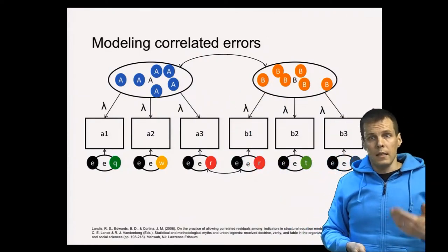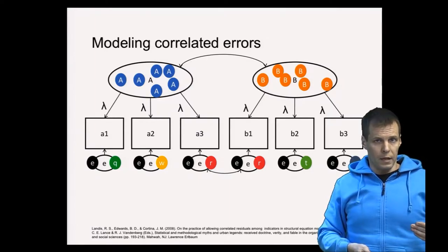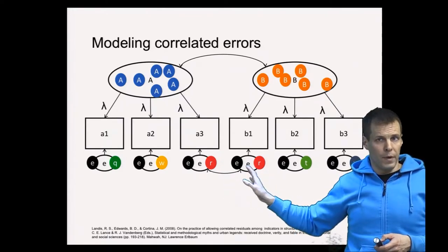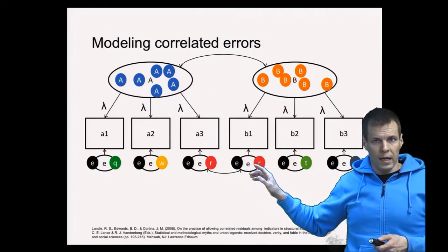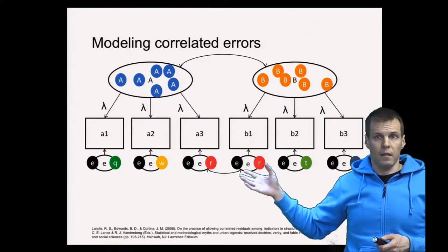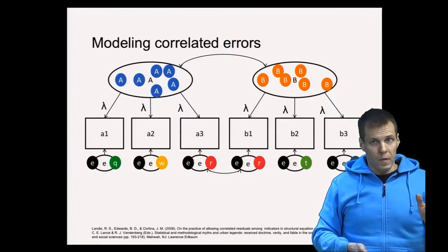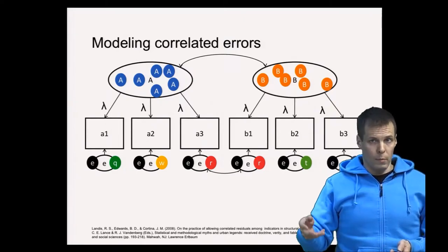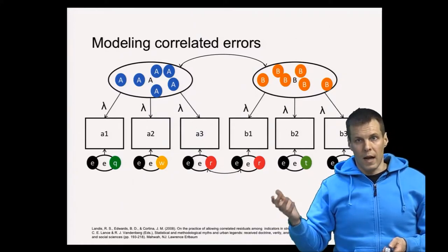This is something many people do: your statistical software will tell you that the model doesn't fit the data perfectly and that you could free some correlations to make the model fit better. But that's a bit dangerous unless you know what you're doing. You should only add correlated errors if you have a good theoretical reason to do so. The fact that your statistical software tells you that you could do something to increase model fit is not a reason to do it — it's an indication to consider it, not a definitive guideline.